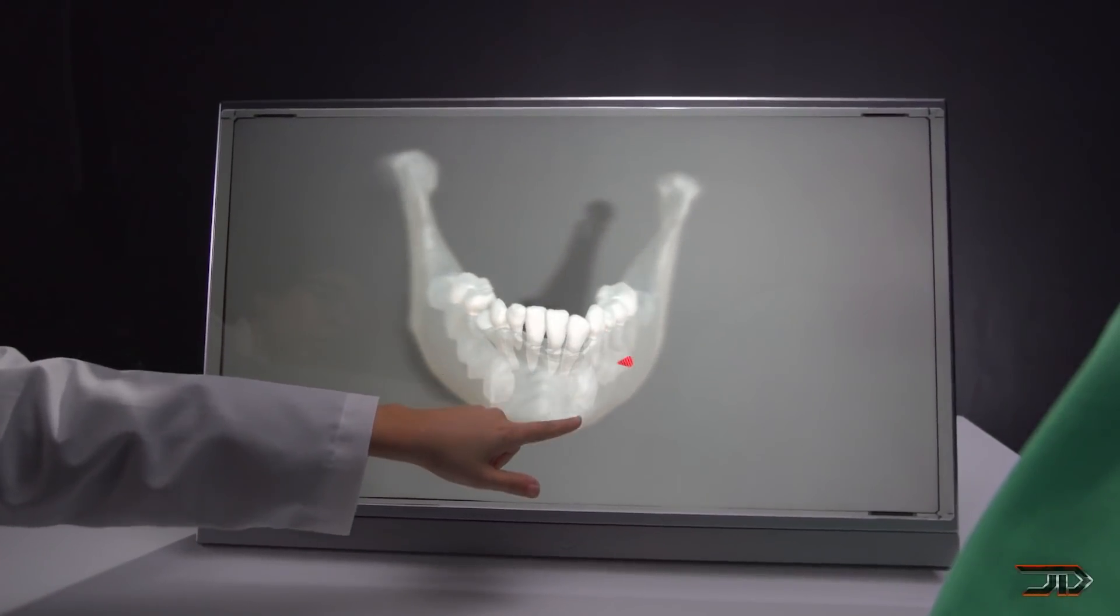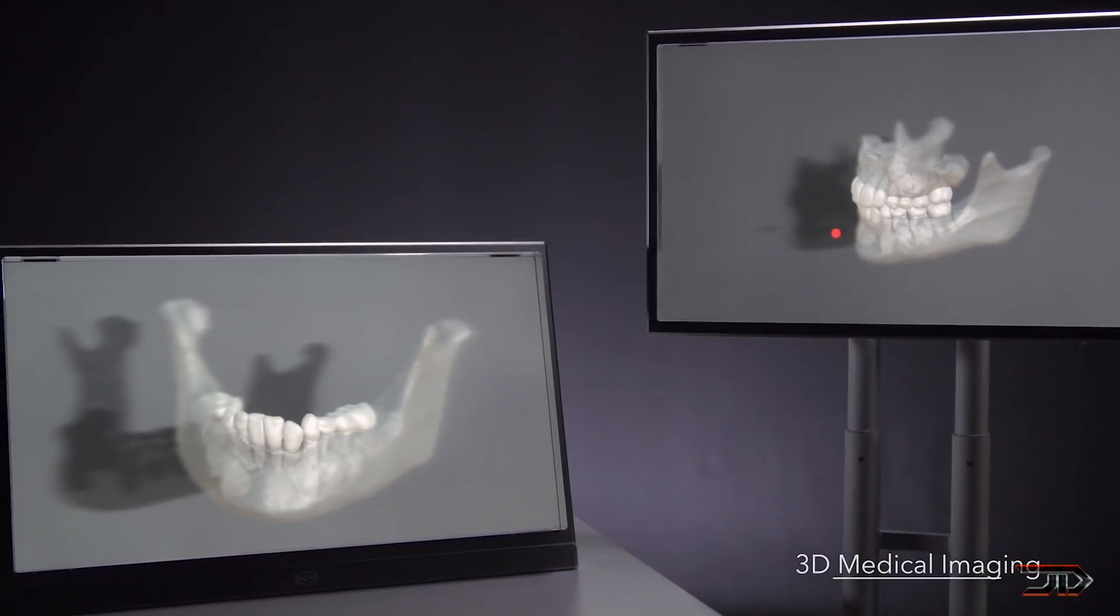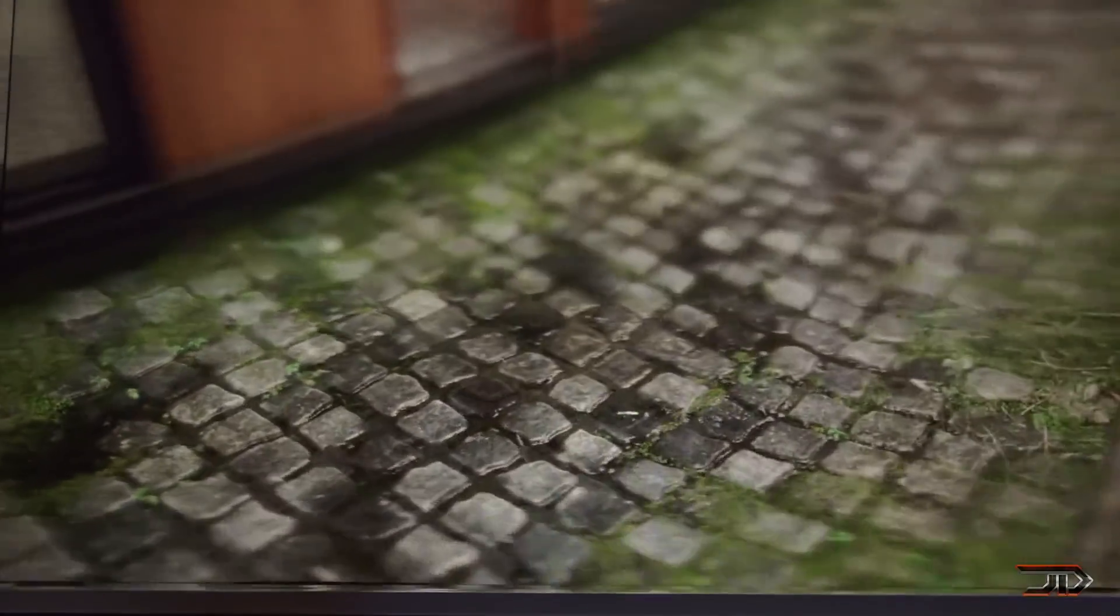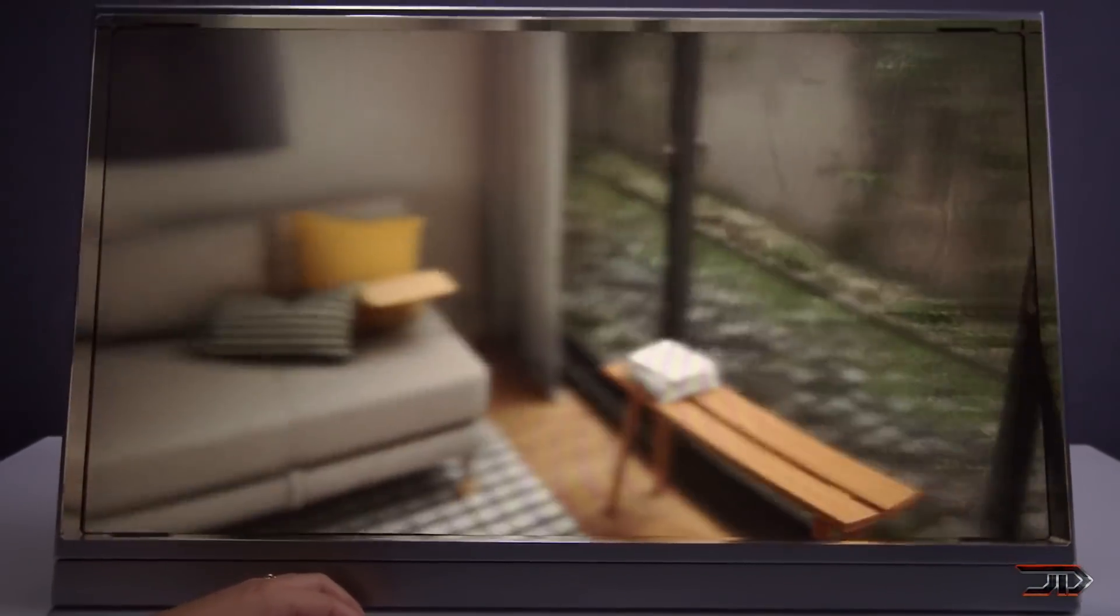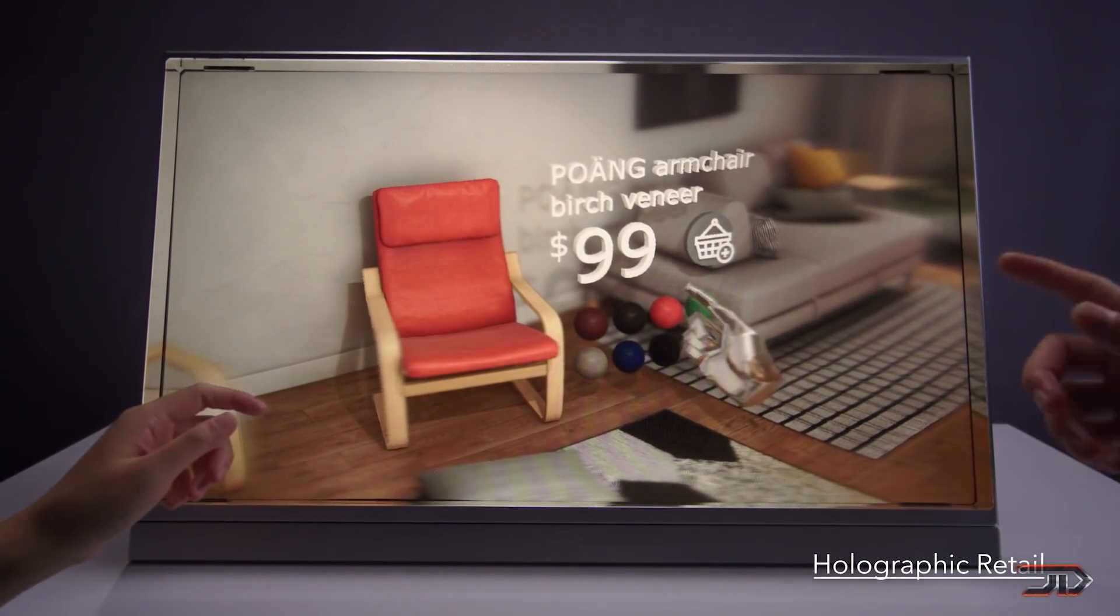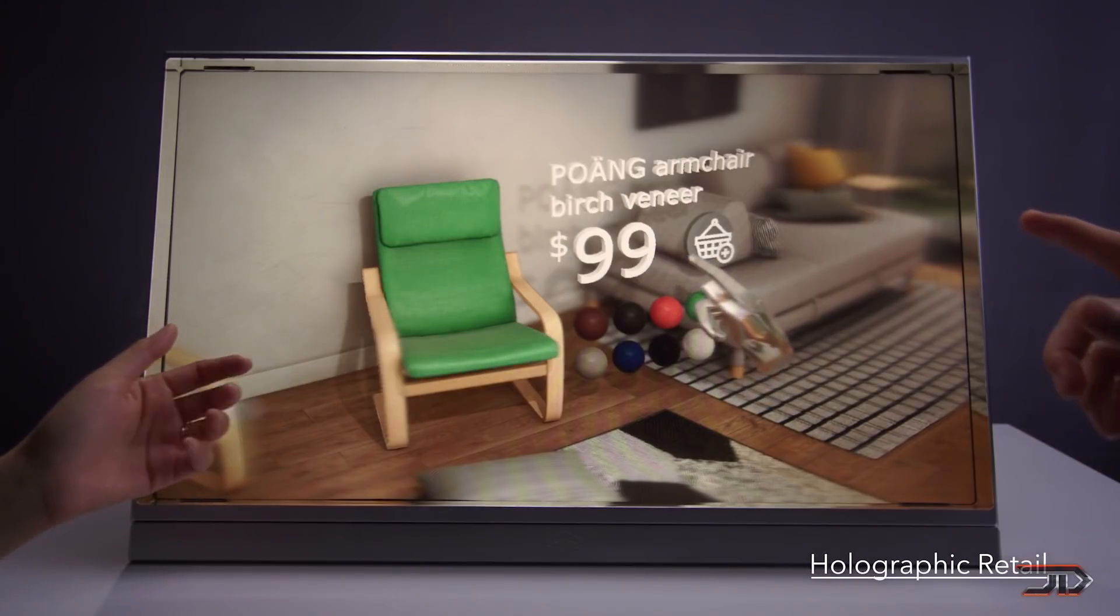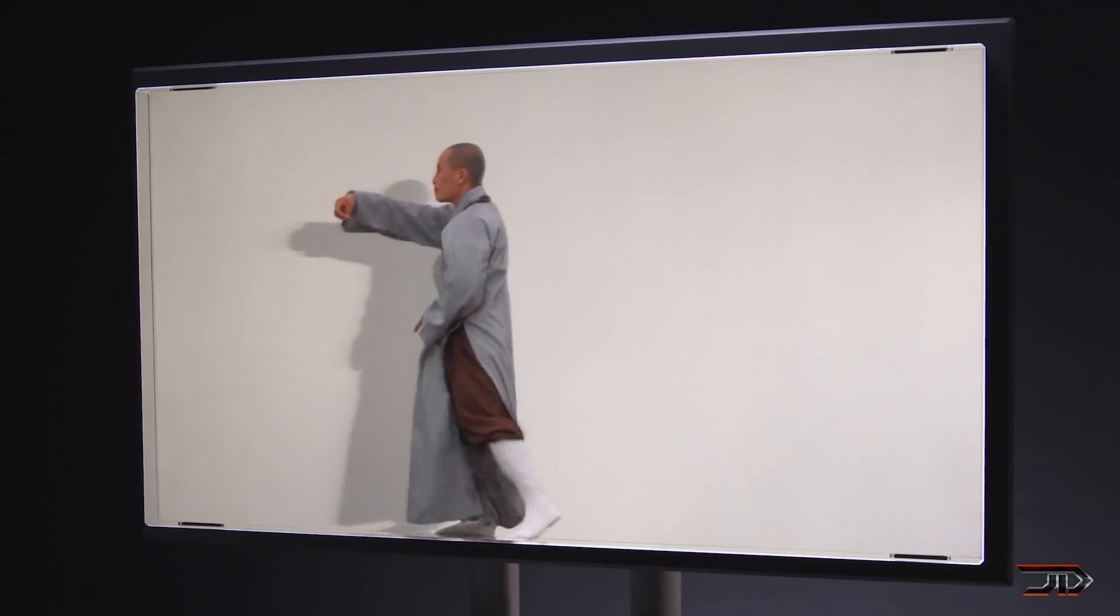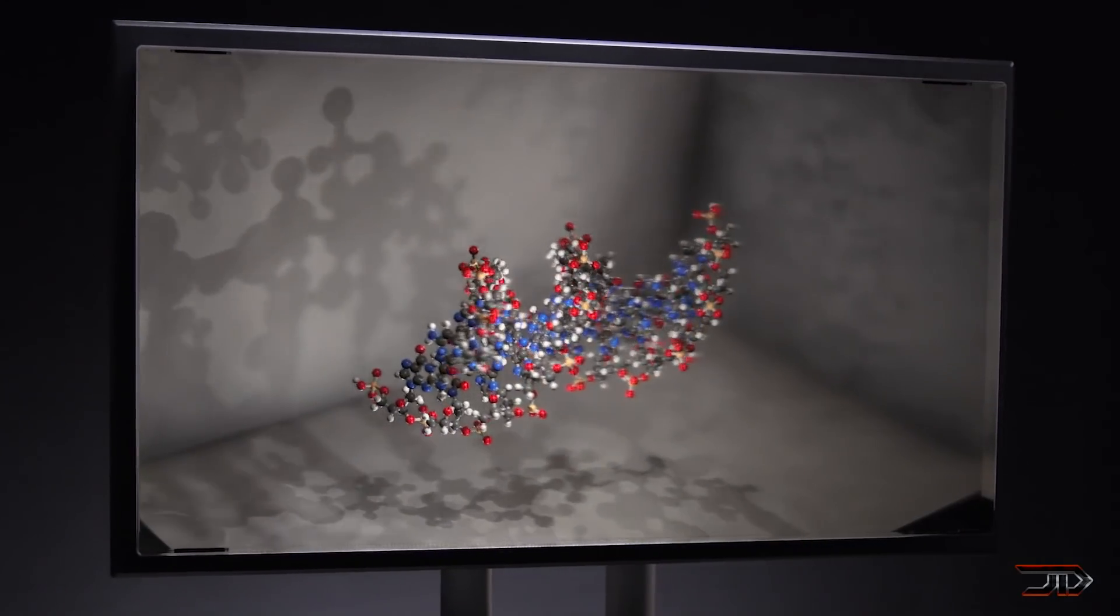Now it does this through a pretty amazing proprietary light field technology which generates simultaneous perspectives of a three-dimensional scene at 60 frames per second. This translates into a stereoscopic view of virtual content. Now the display is limited to a 50 degree view and it's only 32 inches. Nevertheless, this type of new technology development can progress into some pretty incredible displays.